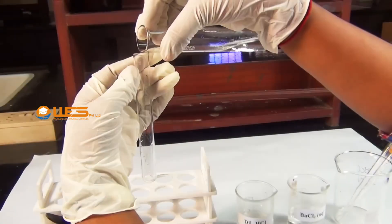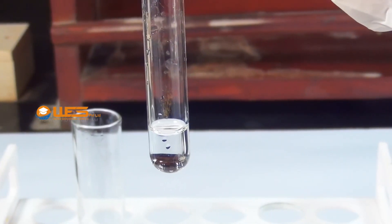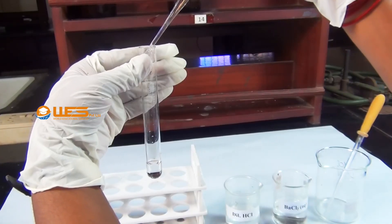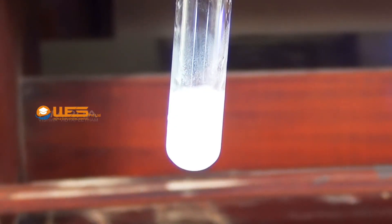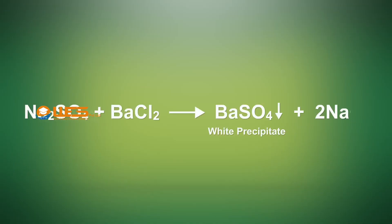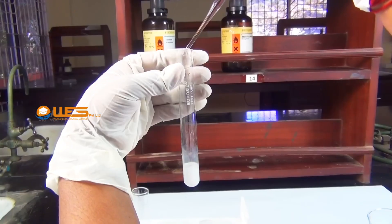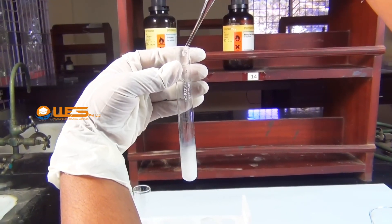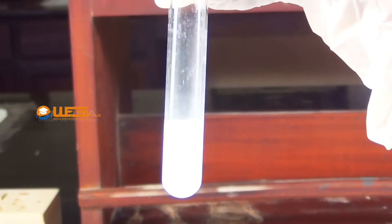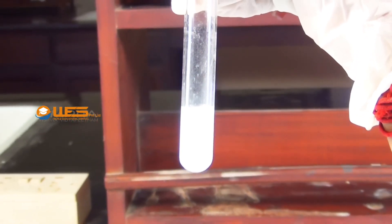Procedure: Take a small quantity of aqueous solution of the salt in the test tube. Add a small amount of barium chloride solution using a dropper. Sulphate reacts with barium chloride to form a white precipitate of barium sulphate. Add a small amount of dilute hydrochloric acid to this precipitate and shake the test tube well. The precipitate is insoluble in dilute hydrochloric acid.